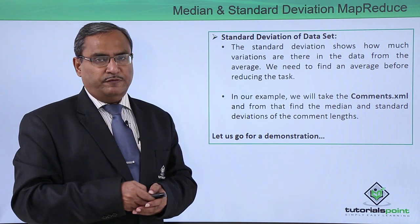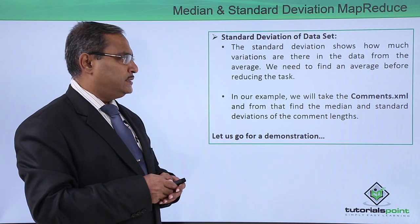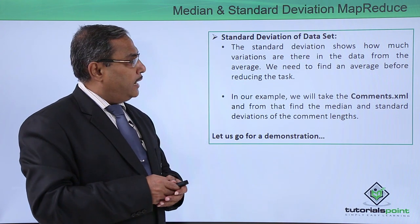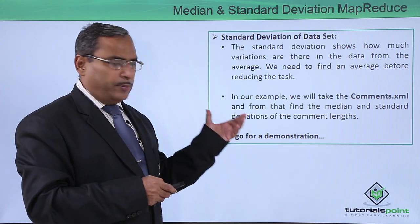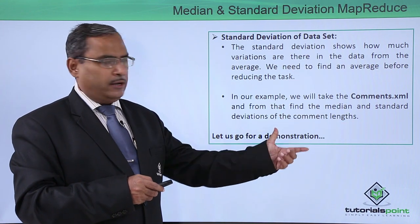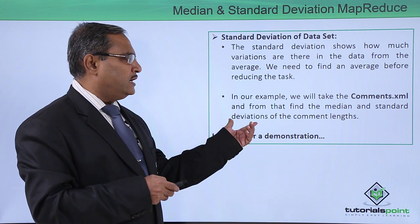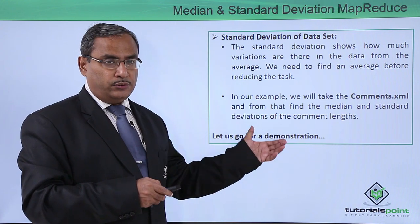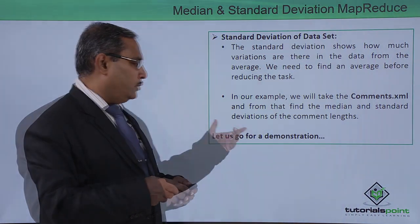Next we are going to discuss standard deviation of the data set. The standard deviation shows how much variation there is in the data from the average value of the data. We need to find an average before the reduce task. In our example, we will take the comments.xml — this is one XML we already have. From comments.xml we will find the median and standard deviation of the comment length.